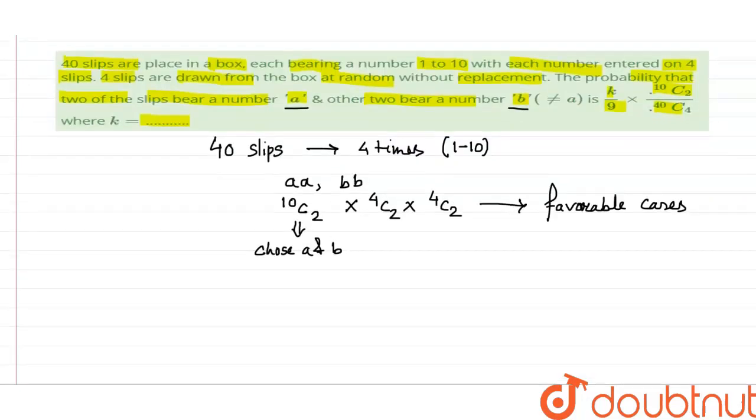How to find out the probability? We have to find out the total cases, total number of cases. Total cases is how many slips are there? 40 slips. How many we have to choose? Four. 40C4.